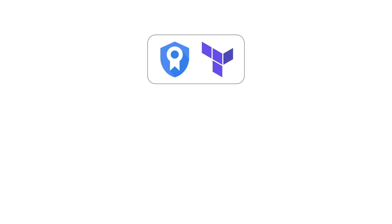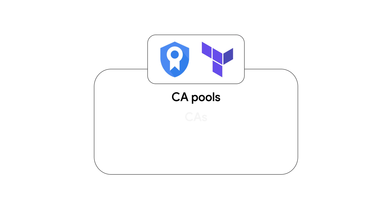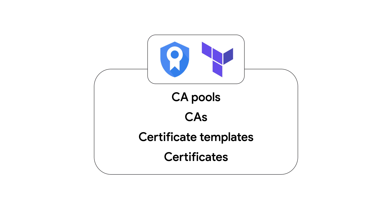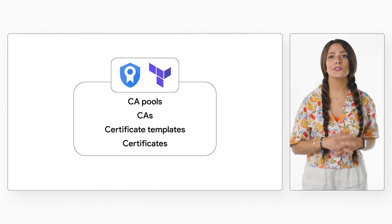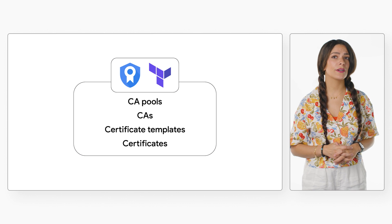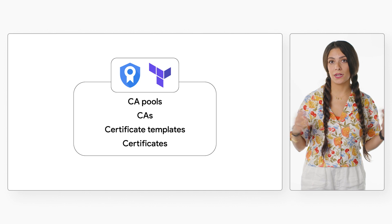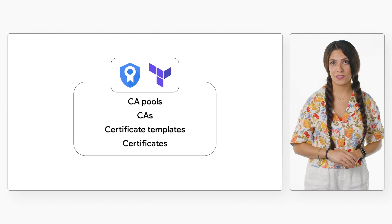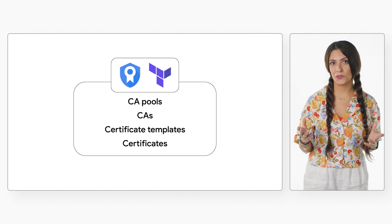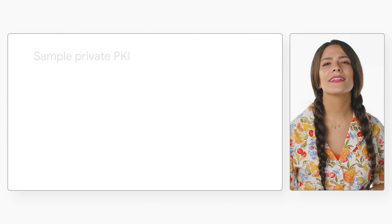Now you can use CAS and manage CA pools, CAs, certificate templates, and certificates via Terraform. And you don't need to do any workarounds with API or G Cloud to activate your subordinate CAs — just use Terraform end to end.